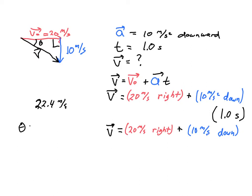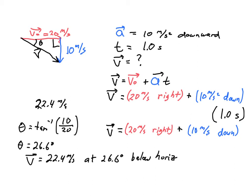So I'll say that theta is going to be equal to the inverse tangent or arc tangent of the opposite side over the adjacent side. And the meters per second on top and bottom will cancel. So 10 over 20. And that'll give us an angle of 26.6 degrees. So then our final velocity is going to be 22.4 meters per second at 26.6 degrees below horizontal to the right.